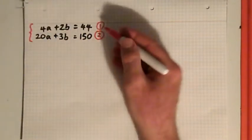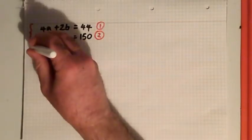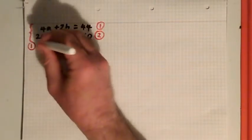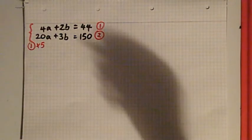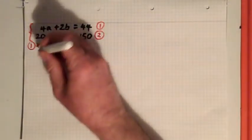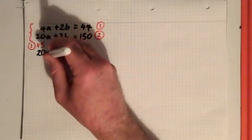Okay, so I'm going to take this equation 1, and I'm going to multiply it by 5. So instead of 4a, multiply it by 5, and you get 20a.